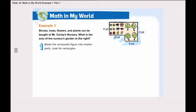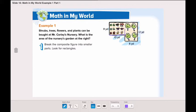Now, look for rectangles. This length stops here, and if we go up, here we decompose the figure into two rectangles. This is rectangle A, and using another color, this is rectangle B.